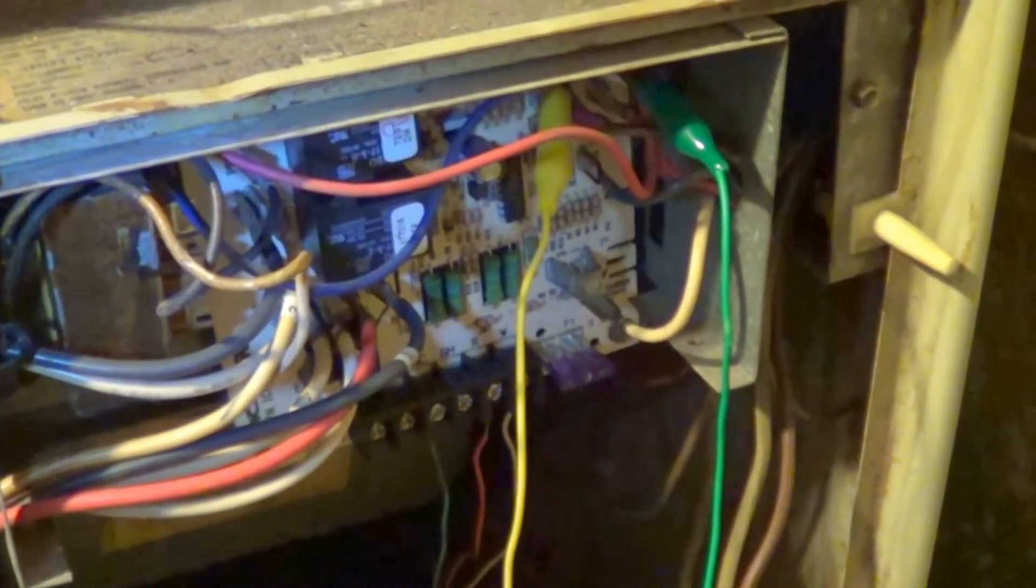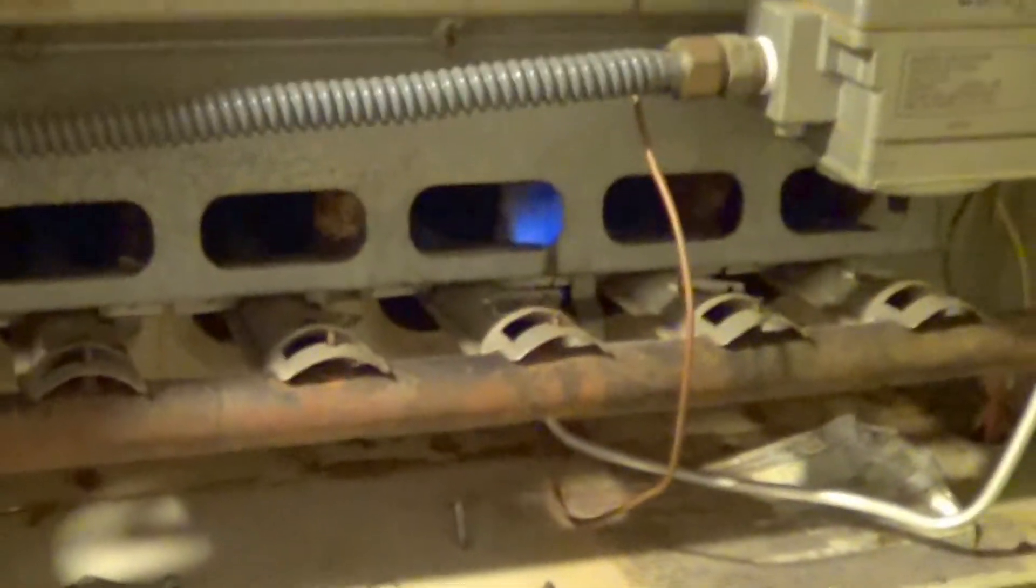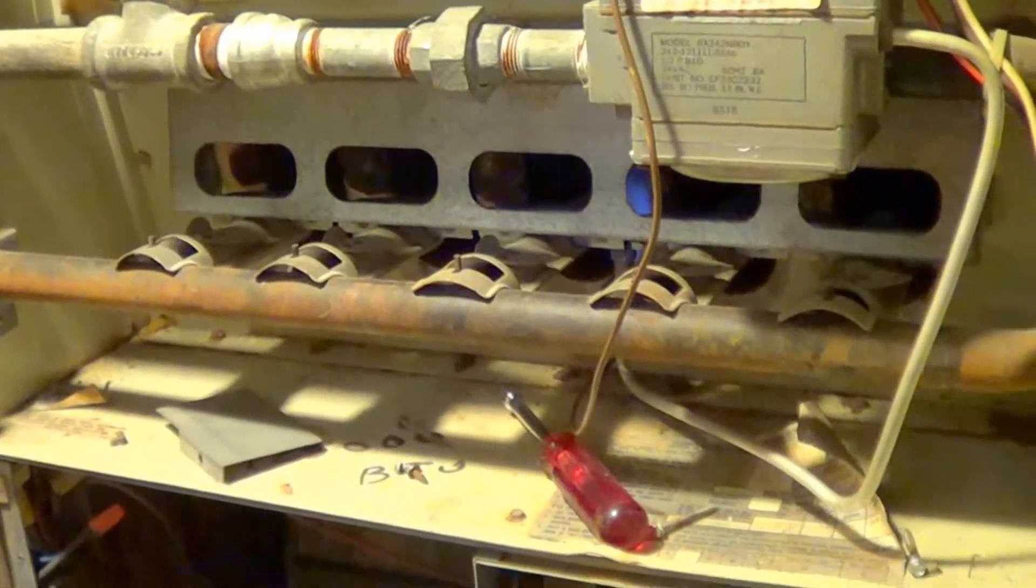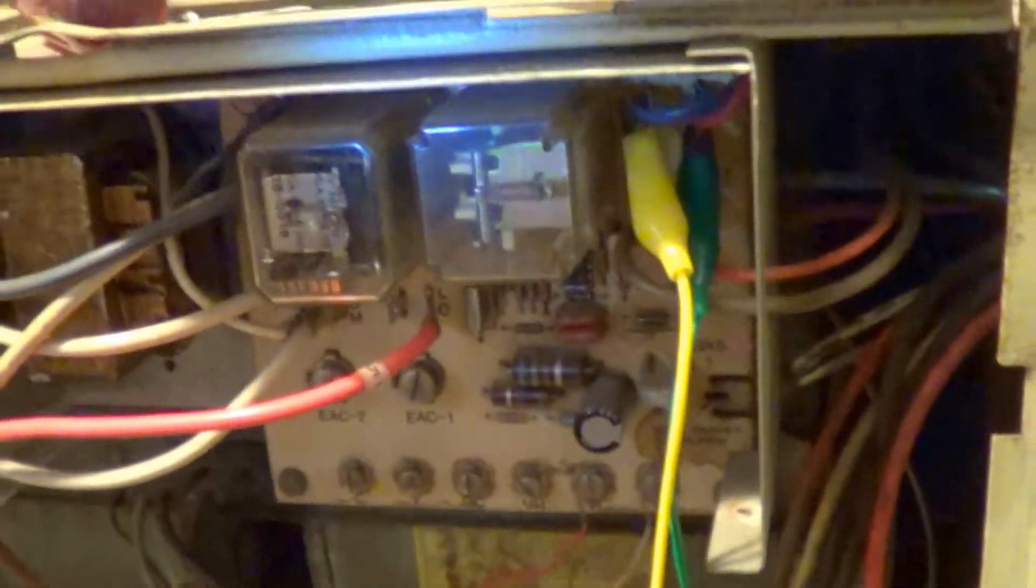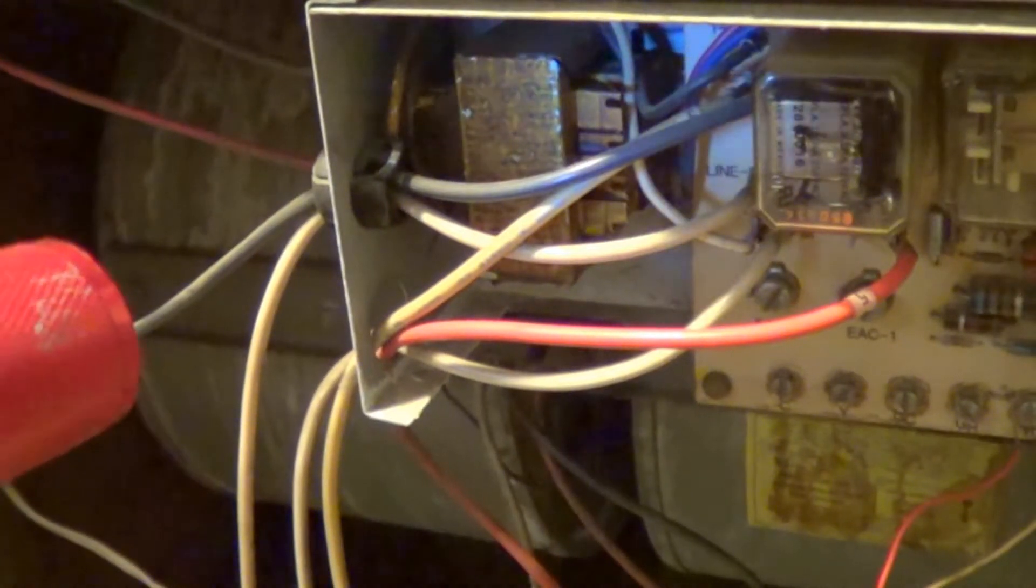On the right control board I've got 28 volts here on the output of the control transformer. That's the control board, that's the right furnace. There's the left furnace. Now we're going to check this control board. On the left control board there's the control transformer. Got no voltage across it on the output of the transformer. Now I'm going to check the input to the transformer. 110 volts on that one.